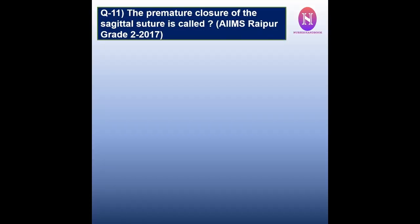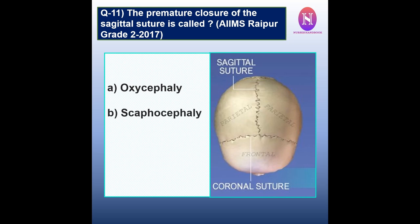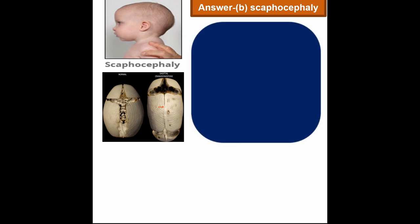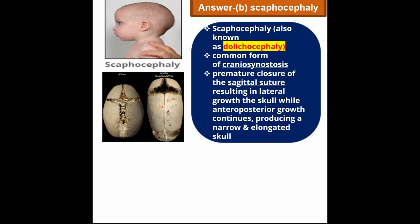Question 11: The premature closure of the sagittal suture is called — a. Oxycephaly. b. Scaphocephaly. c. Anencephaly. d. Acrocephaly. The correct answer is b — scaphocephaly, also known as dolichocephaly. This is the most common form of craniosynostosis, where premature closure of the sagittal suture results in lateral growth of the skull, producing a narrow and elongated skull.